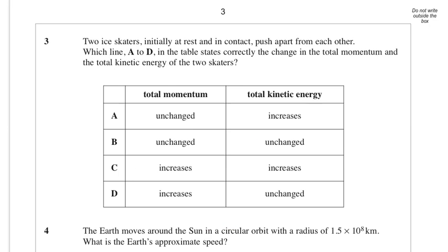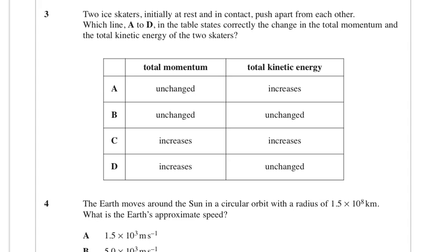So two ice skaters, initially at rest and in contact, push apart from each other. Which line states correctly the change in total momentum and the total kinetic energy of the two skaters? Initially their total momentum is 0, which means the total momentum must be 0 after, so it's not going to change. And the kinetic energy initially is 0, and afterwards they both obviously have kinetic energy, so the kinetic energy is going to increase.